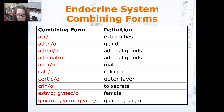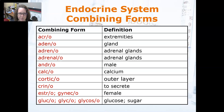Adeno means gland, and adrenal or adrenalo means adrenal glands. Andro means male. Calso means calcium. Cortico means outer layer. Crino means to secrete, which is part of where we get endocrine. Estro and gonico both mean female.